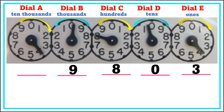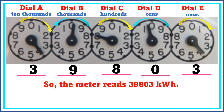Lastly, in dial A, the pointer is moving clockwise and looks like it is right on four. However, the dial to its right — dial B — has not passed zero, so we record this as three. Therefore, the meter reads 39,803 kilowatt-hours.